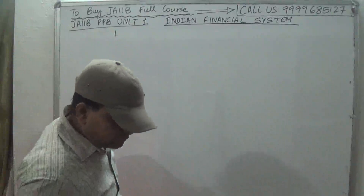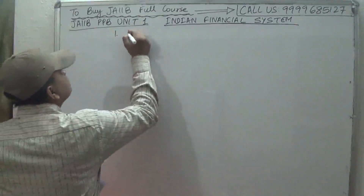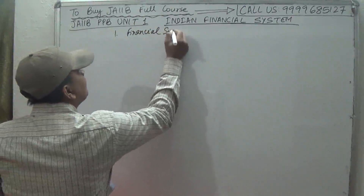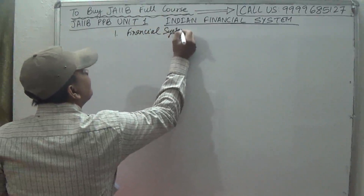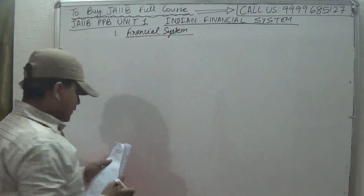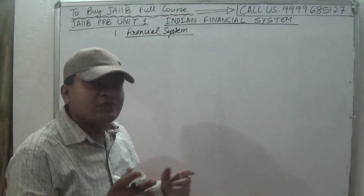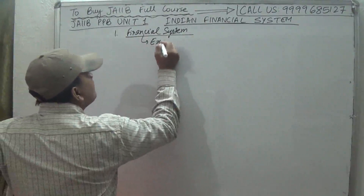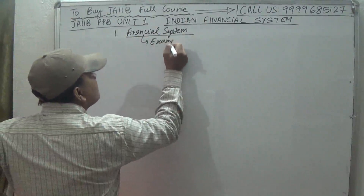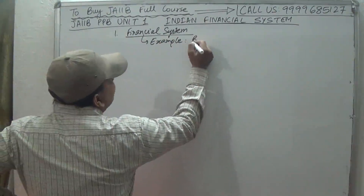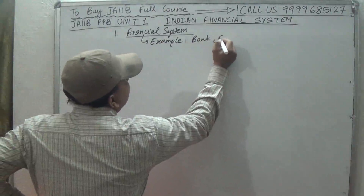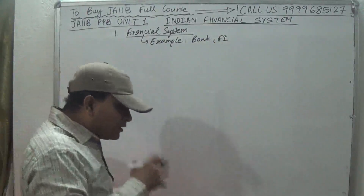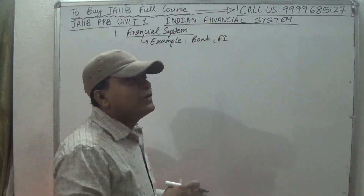So the first point is the financial system. What is meant by the financial system? Let us start with an example. An example of a financial system is a bank and an FI (financial institution).